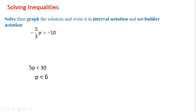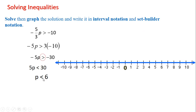Another example: minus 5 over 3 times P greater than minus 10. So minus 5P is greater than 3 times minus 10. I multiply all my equation by 3 to get rid of the denominator. Now minus 5P is greater than minus 30. Because it's a negative coefficient of the variable, I multiply all the inequality by a minus and flip the sign: five P is less than 30, so P is less than 6. I draw the axis — it's opened on the six — so the interval notation will be minus infinity to 6 with 6 opened.